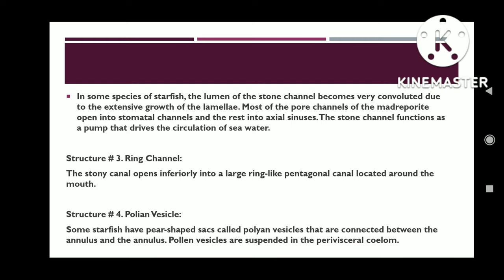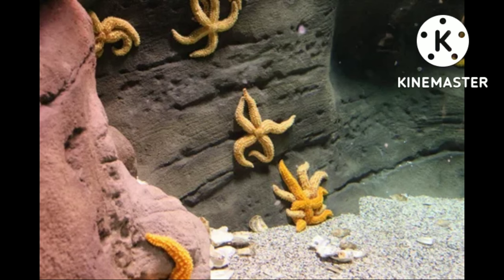Structure three: ring canal. The stone canal opens inferiorly into a large ring-like pentagonal canal located around the mouth. Structure four: Polian vesicles. Some starfish have pierced sacs called Polian vesicles that are connected to the ring canal.